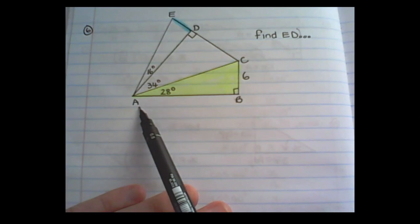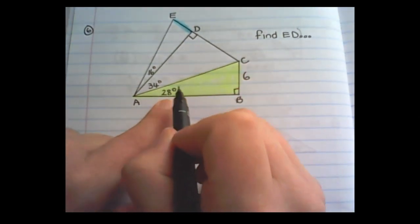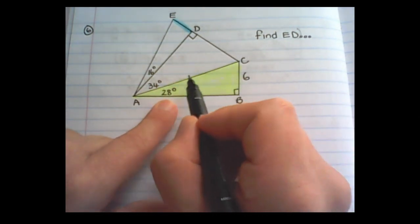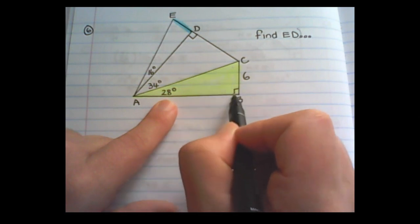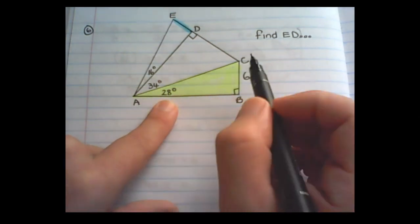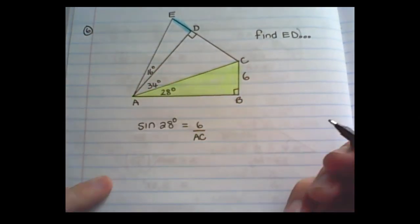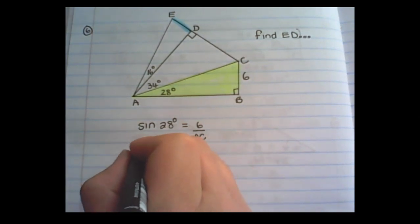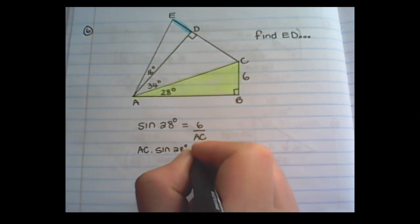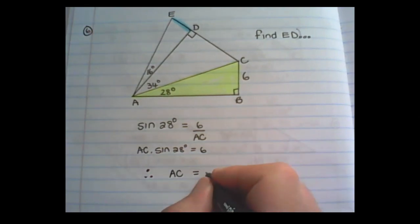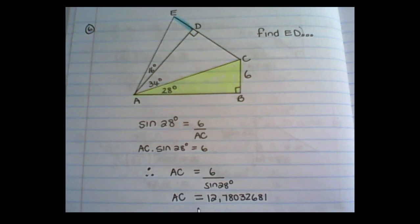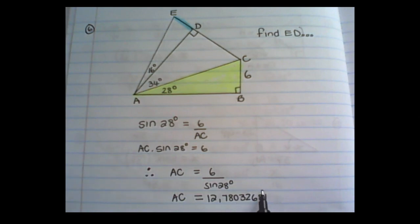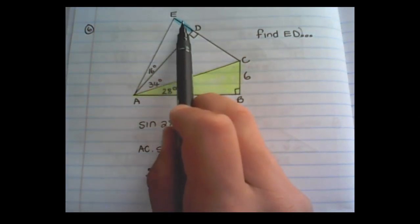Let's first find the length of AC. From the position of 28 degrees, we have 6 as the opposite and AC as the hypotenuse because it is opposite the right angle of the triangle. So to find AC I will use sine. Multiplying with AC and dividing both sides by sine of 28 degrees, my calculator gives AC equals 12.78032681. I'm not rounding off at this point to keep the answer as accurate as possible — I'll only round off once I calculate ED.